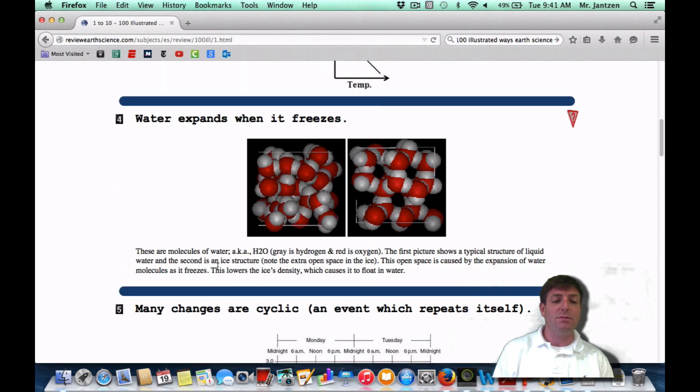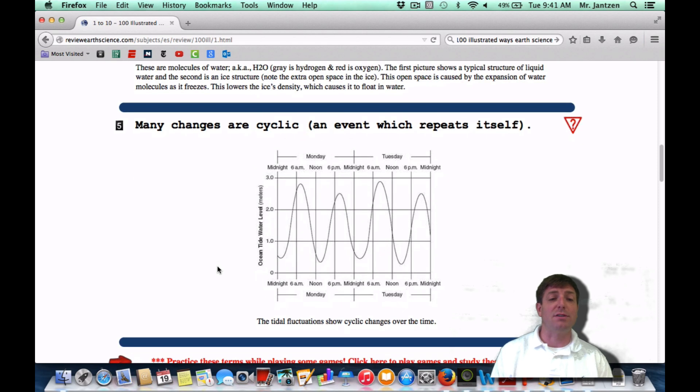Let's move on to number five. Many changes are cyclic in nature, an event that repeats itself. There's a lot of cyclic things in our science. You could have the tides as shown here, the seasons, day-night, the phases of the moon. These are all cyclic changes. In other words, they're events that repeat themselves. And that graph, that up and down graph is very indicative of a cyclic change.